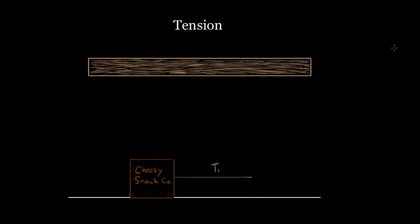What's happening inside the rope? Ropes are typically composed of fibers that have been braided together or wound around each other, so that when I exert a force at one end, that force gets transmitted through the rope all the way to the other end and exerts a force on the box. I pull on the fibers here, they pull on the fibers behind them, and that keeps going until the force is transmitted all the way to the other end.